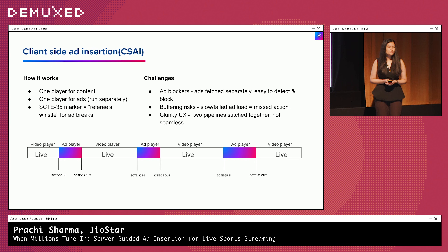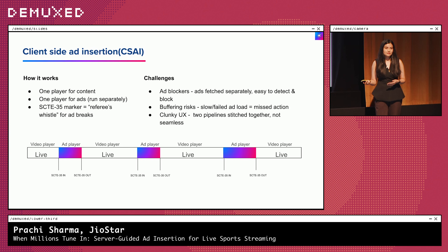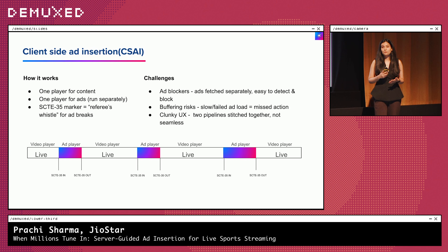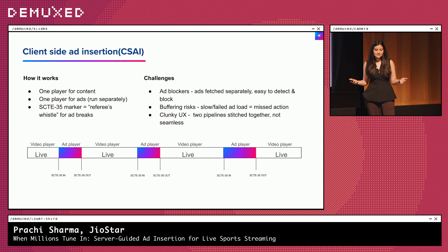CSAI works, but it comes with its challenges. The first being that because the call to ads is made separately, they are more susceptible to ad blockers — they're easy to detect and block. You also get buffering risks, because if the ad fails to load on a low-powered device or weak network, the user either sees nothing or your playback stalls. And finally, your user experience feels clunky — ads feel bolted on, because it's literally two different players switching back and forth on your client. So while CSAI gave the industry direct measurement and control in the early days, as live streaming grew in scale and complexity, we needed something that was much more seamless and resilient. And that's where SSAI came in.